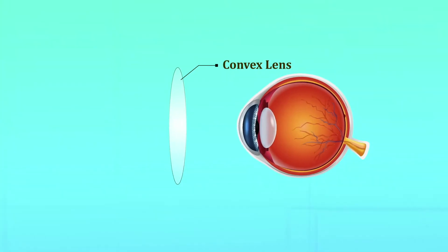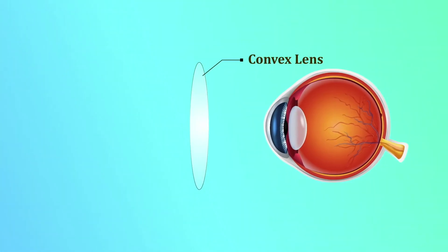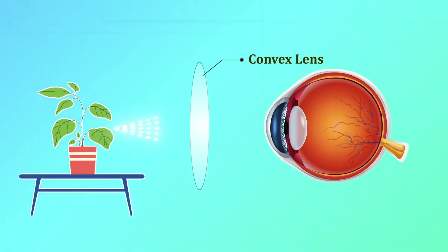How can we correct this? We can use a convex lens. Let's use a convex lens here. Let's consider the eye. Convex lens. What happens in the convex lens? It converges the light, right?